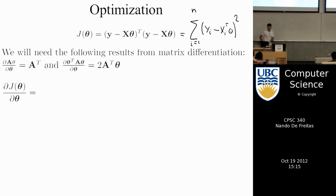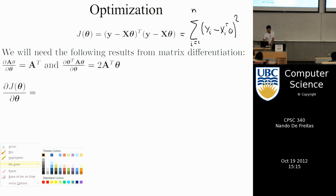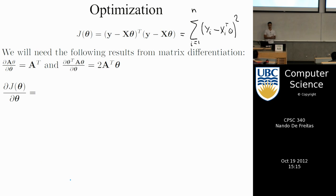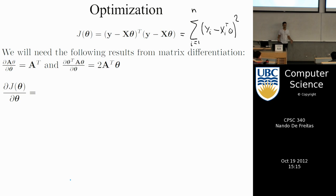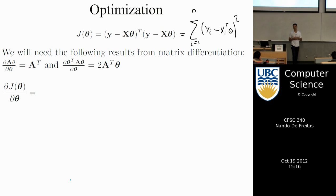I could take derivatives of these terms one by one, but instead I'm going to work with matrices because they're easier to manipulate both mathematically and in code. In doing so, we need to learn some new rules of differentiation — differentiation of matrices. I don't expect anyone to have prior knowledge of matrix differentiation, nor will I be examining you on it, but I will expect that you can apply a rule when I show it to you. These rules are all on Wikipedia.